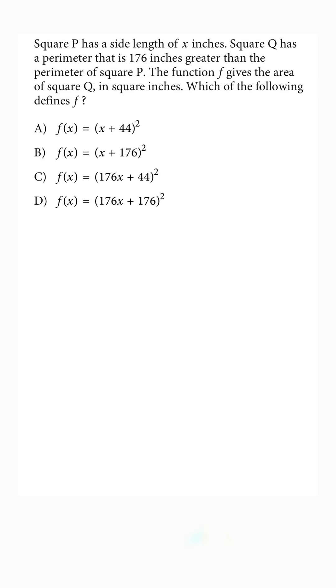Square P has a side length of x inches. Square Q has a perimeter that is 176 inches greater than the perimeter of square P. The function f gives the area of square Q in square inches. Which of the following defines f?